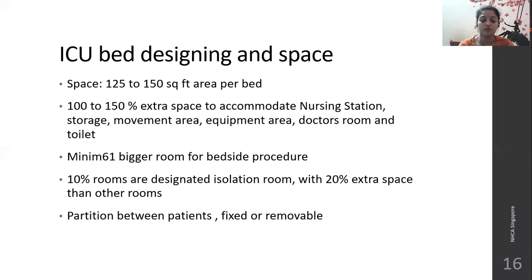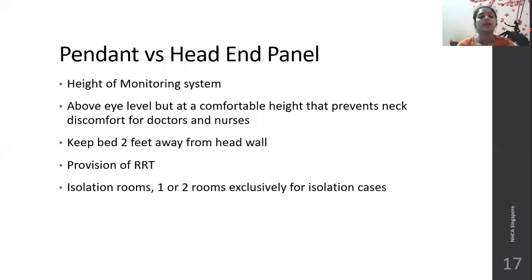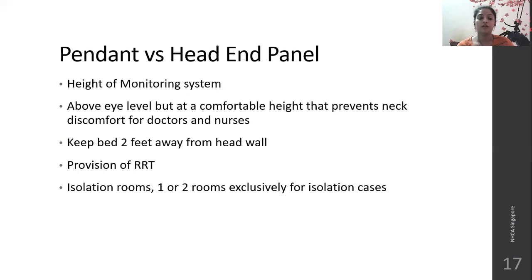Partition between patients should be fixed or removable. The monitoring system can either be a pendant monitoring system — hanging in the center of the ICU — or a head-end panel system where all monitors are placed at the head end of the patient. The monitoring system should always be above eye level but at a comfortable height to prevent neck discomfort. Keep each bed at least two feet away from the wall. One or two rooms exclusively for isolation cases should be provided.